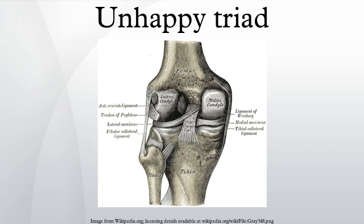The anterior cruciate ligament is one of the four crucial ligaments in the knee. It originates from the lateral condyle of the femur and goes to the intercondyloid eminence of the tibia. Its function is to provide stability in the knee and minimize stress across the knee joint. It also restrains excessive forward movement of the leg and limits rotational movements in the knee.